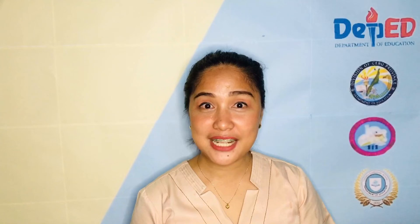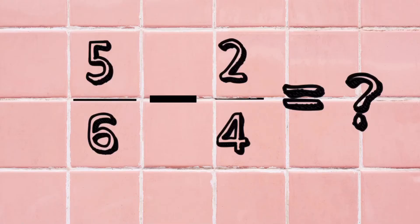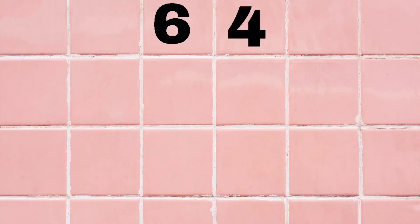Subtracting dissimilar fractions follows the same steps. 5 sixths minus 2 fourths. First, we find the LCD of 6 and 4 through multiples.